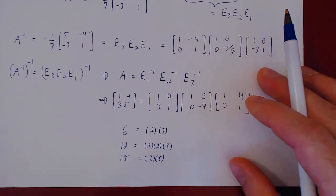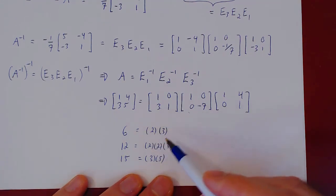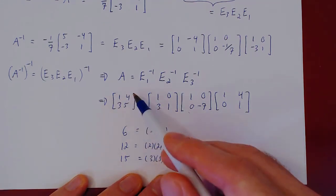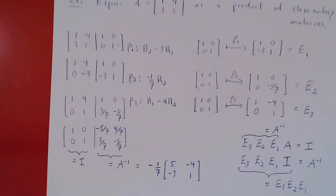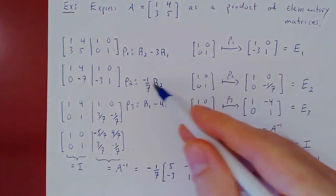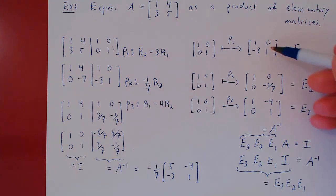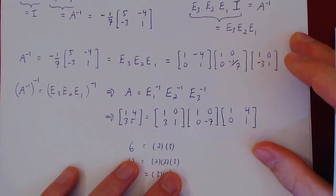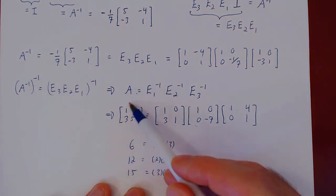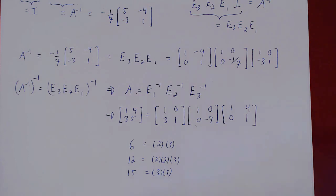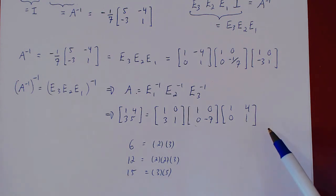One important difference worth mentioning: prime factorization is unique, but factoring an invertible matrix as a product of elementary matrices is not necessarily unique. If you row reduce A using a different sequence of row operations, you get a different sequence of elementary matrices and a different decomposition. On a problem sheet, you may use different row operations than shown here and end up with a different decomposition — that does not mean your answer is wrong. There are actually several possible answers.